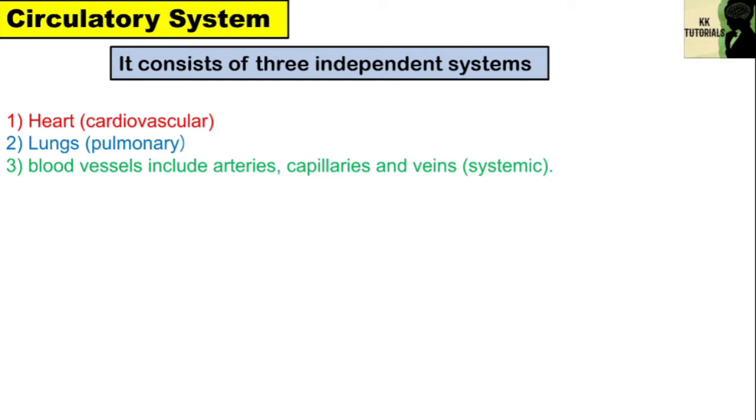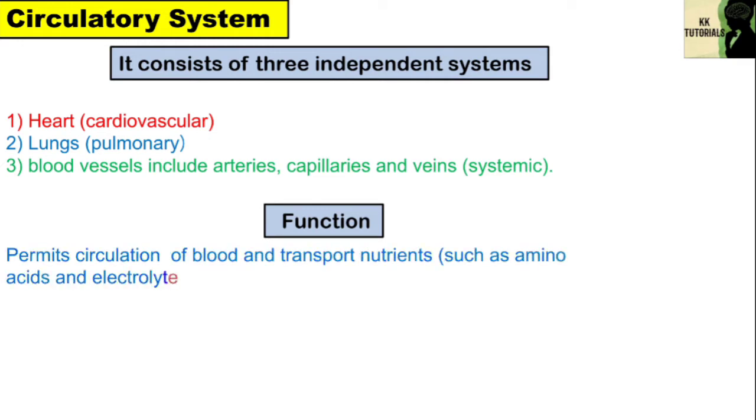Let's talk about the functions of circulatory system. It permits circulation of blood and transport of nutrients such as amino acids and electrolytes. It also transports oxygen, carbon dioxide, hormones, and takes away wastes.